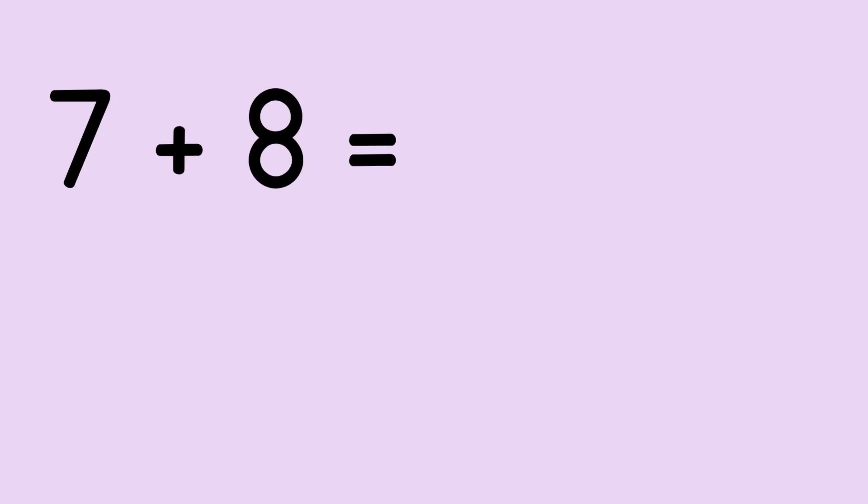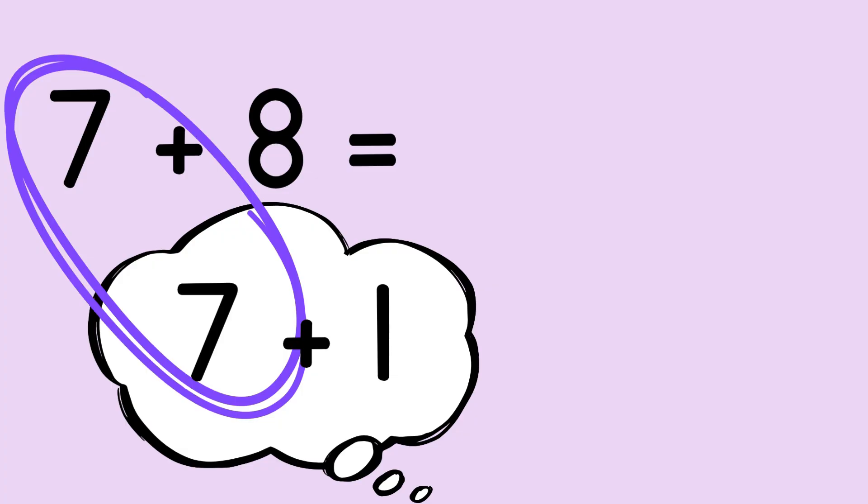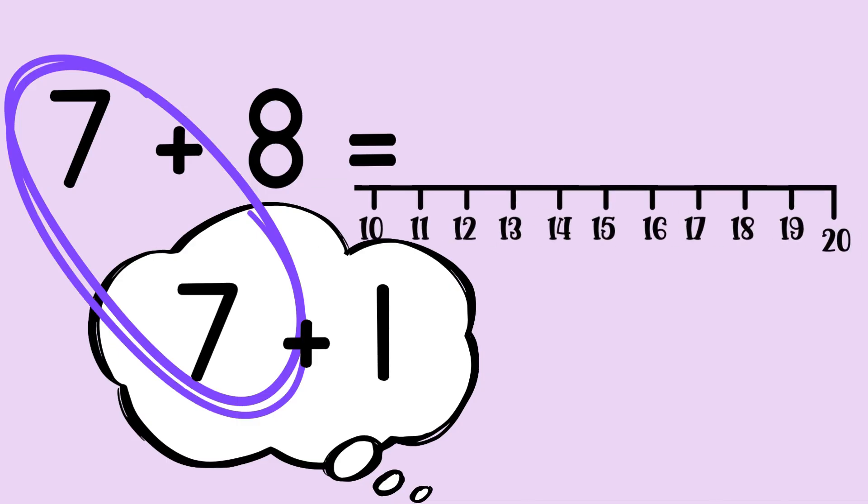Here's seven plus eight. Remember eight is really seven and one. So the double that I can find is seven plus seven. Seven plus seven, we know that. That's 14. So 14 plus one more is 15.